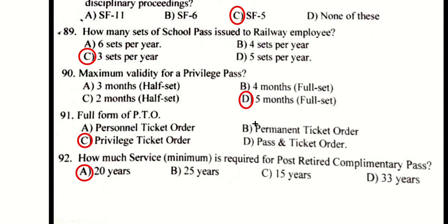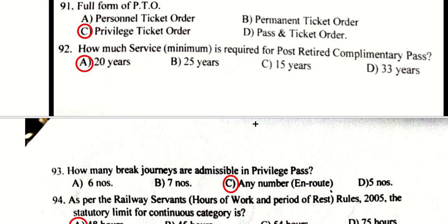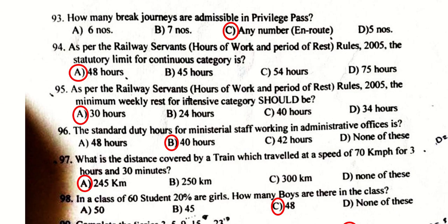Maximum validity for a privilege pass is five months. Full form of PTO is Privilege Ticket Order. For post-retirement complimentary pass, 20 years of service is required. Any number of break journeys are admissible in a privilege pass. As per Railway Servants Hours of Employment Regulation Act 2005, the statutory limit for continuous category is 48 hours.